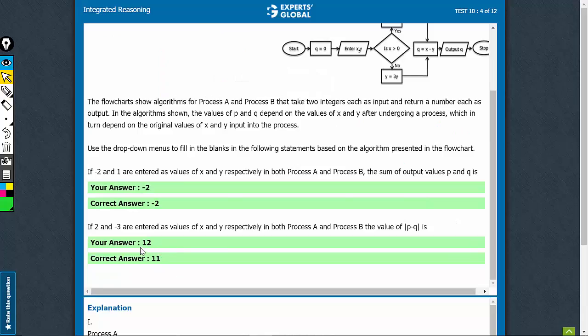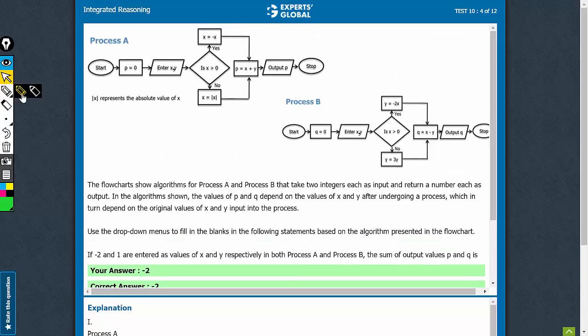Let's come to the second part of the question. This says 2 and minus 3 are entered and then mod of p minus q. So, let's figure it out. 2 and minus 3 are entered. 2 comma minus 3.